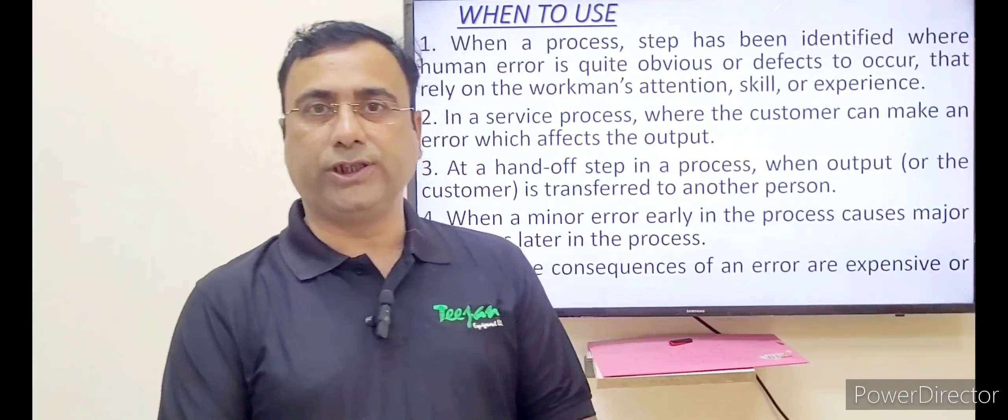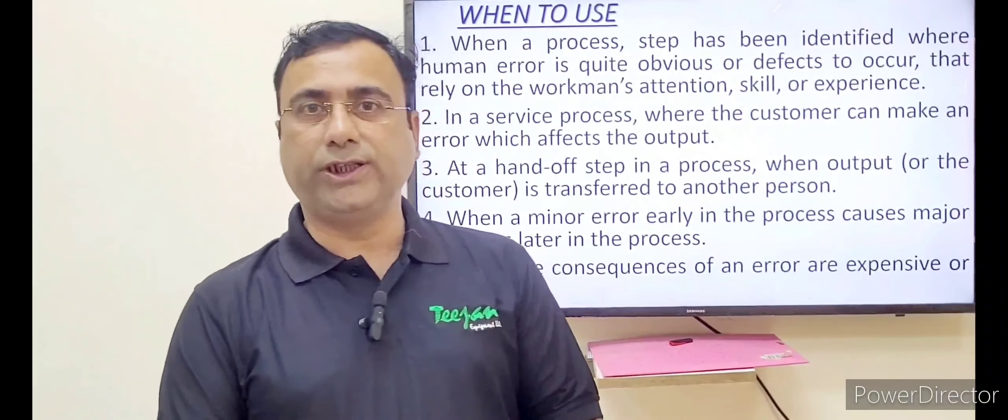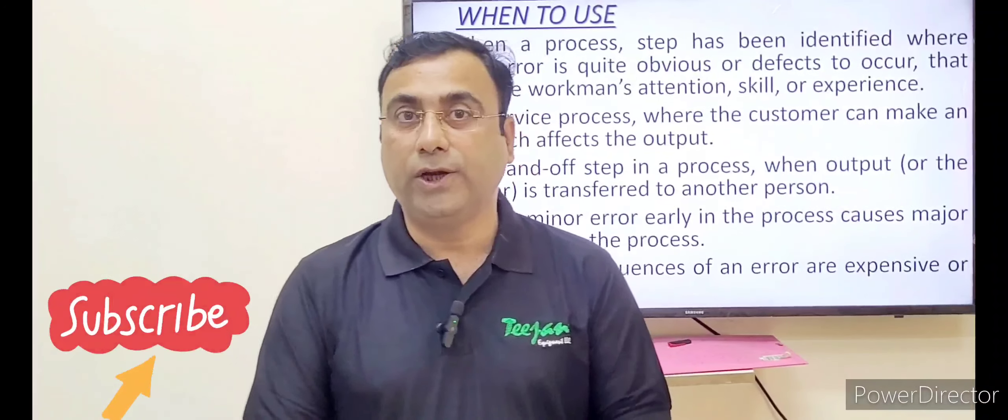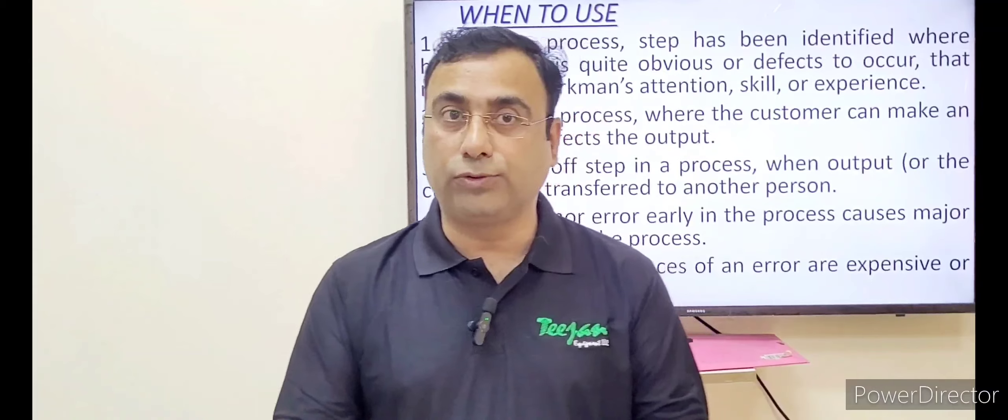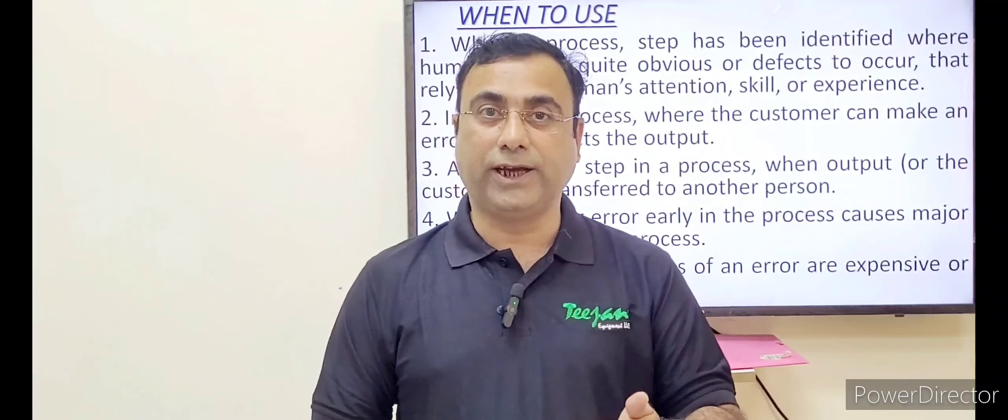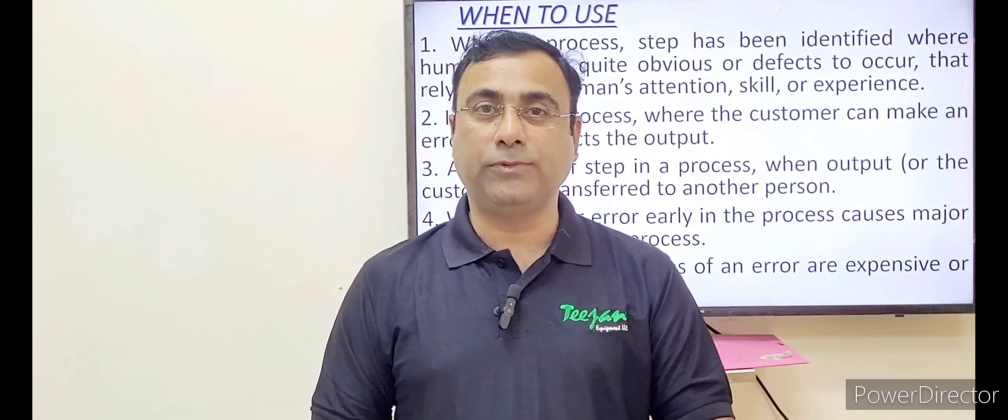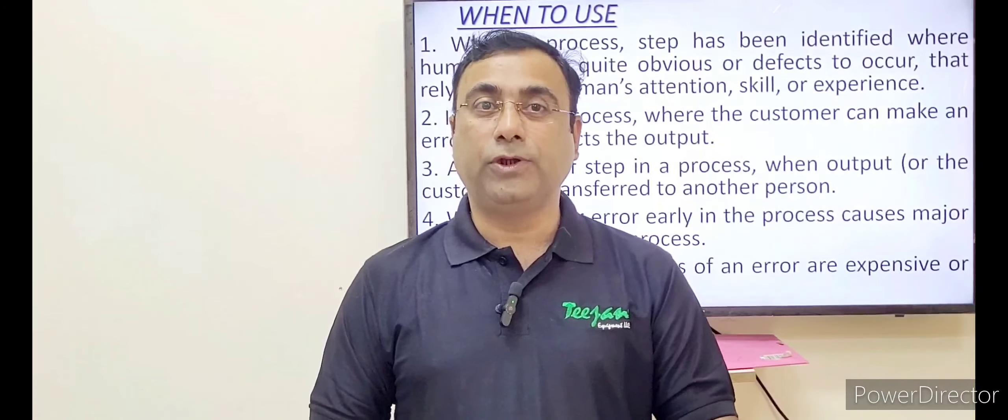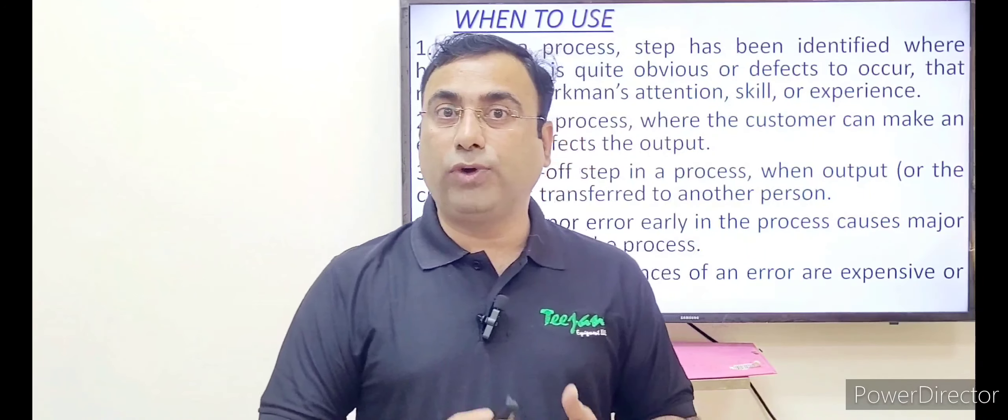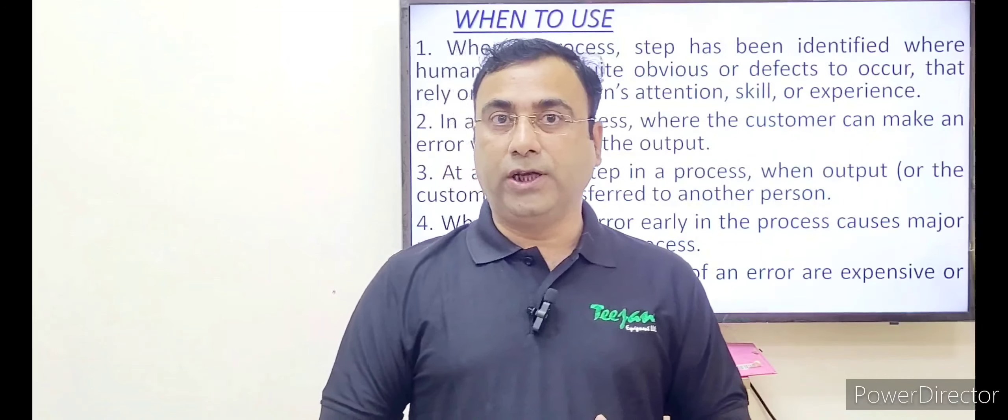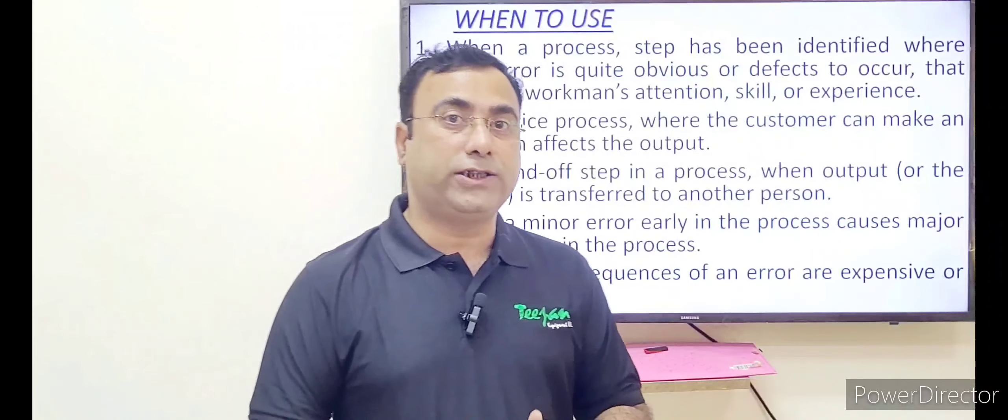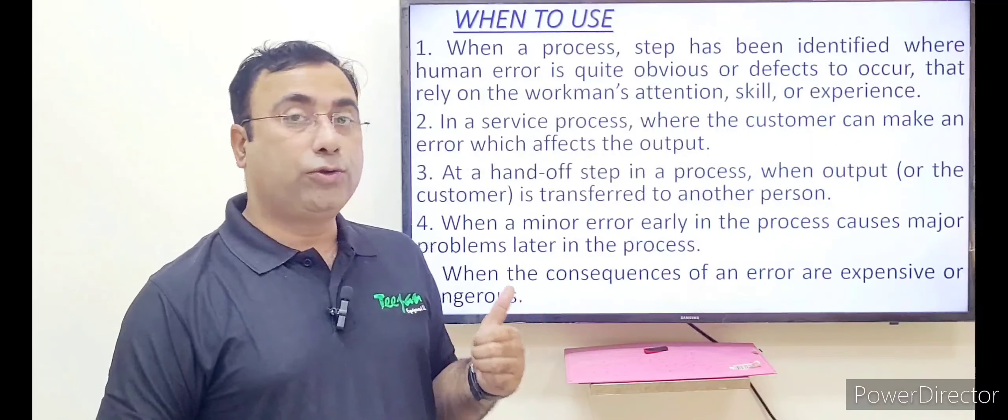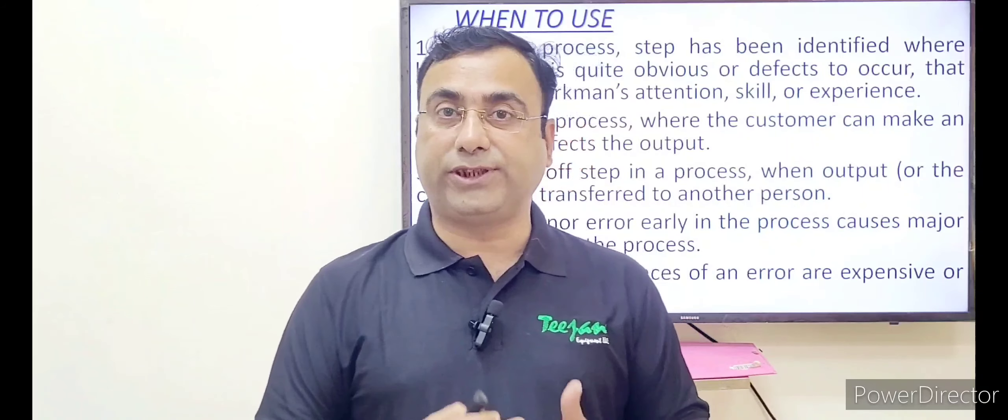Poka Yoke can be used in trading business where you know that customer can make mistake. Since you are in trading, it is quite difficult to request to the customer that you cannot do this mistake. But we implement here the mistake proofing system to avoid that customer's mistake. This system can be used in manufacturing, in supply chain, as well as in the business where only the trading is happening.